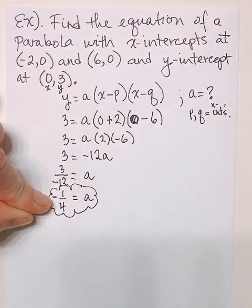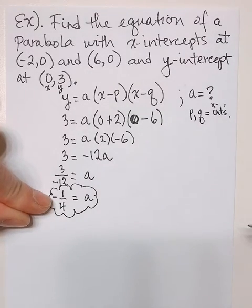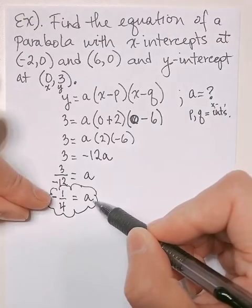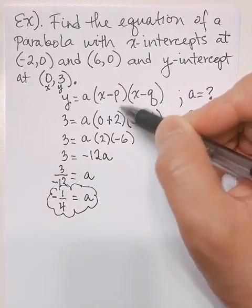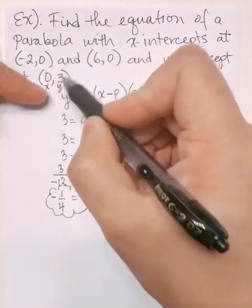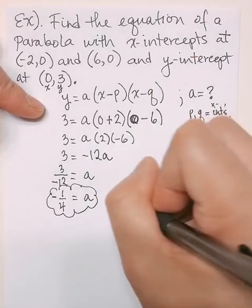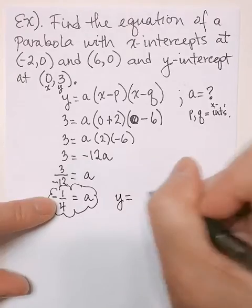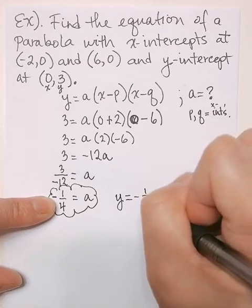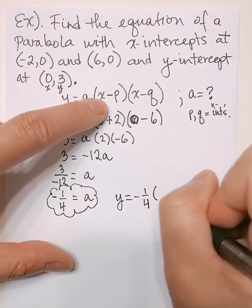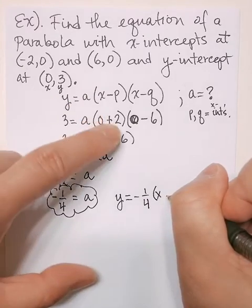Now what do we do next? We need to go back to the factor form and put these values in. We don't need (0,3) anymore, we can just use x and y. So it'll be y = -1/4(x + 2)...